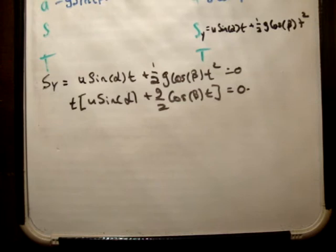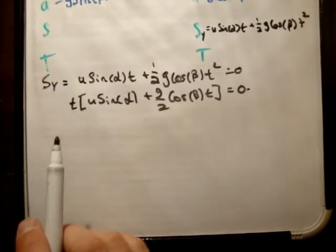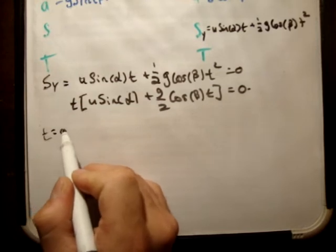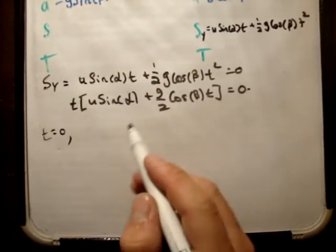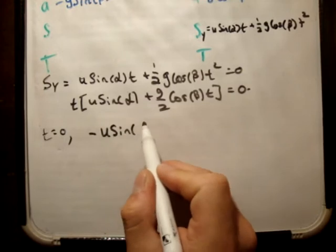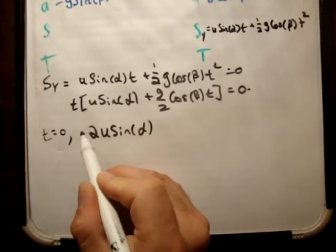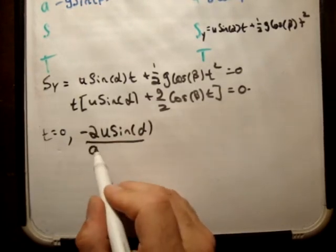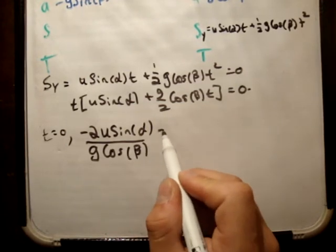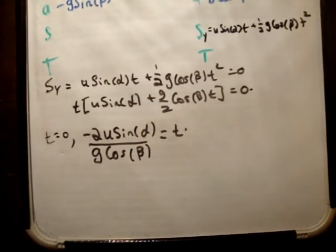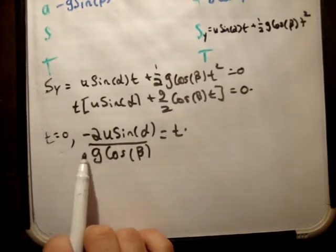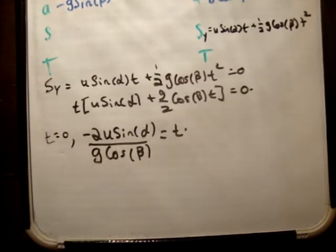If two things multiply to give 0, one of them must be 0. So t equals 0 is one solution. Rearranging the other factor: t equals minus 2u sin alpha over g cos beta. Time is always positive — this currently looks negative, but g is a minus number, giving us a positive again.